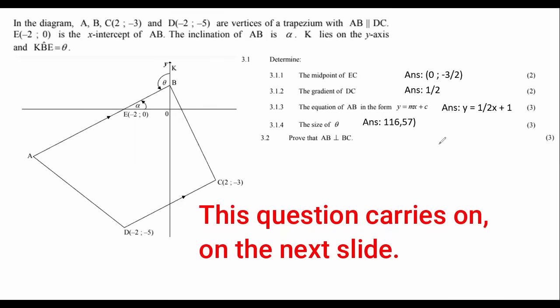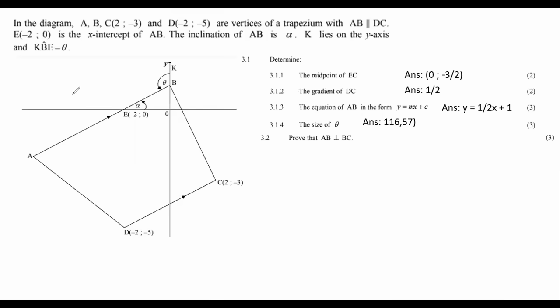We are given a diagram of a trapezium. They said that these two lines are parallel, and the inclination of AB is alpha. K lies on the y-axis. Everything they've told us is in the question or on the diagram.